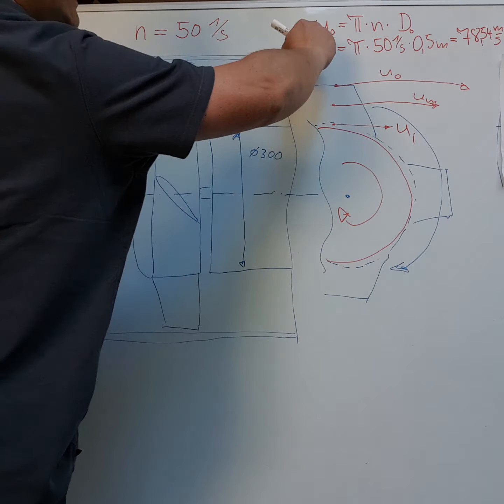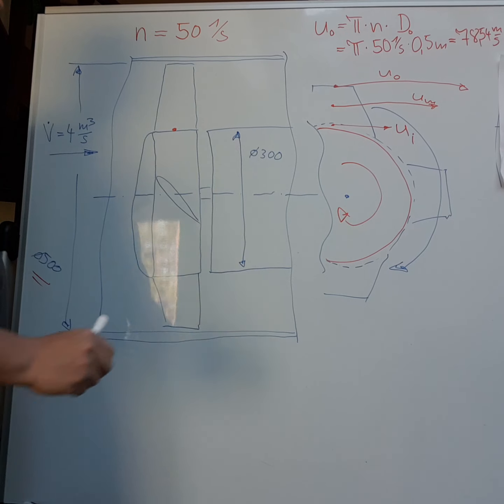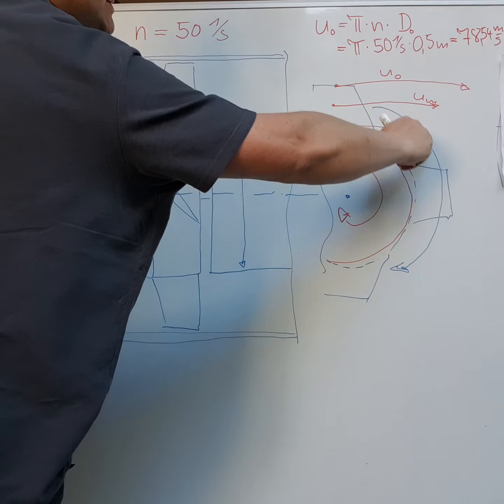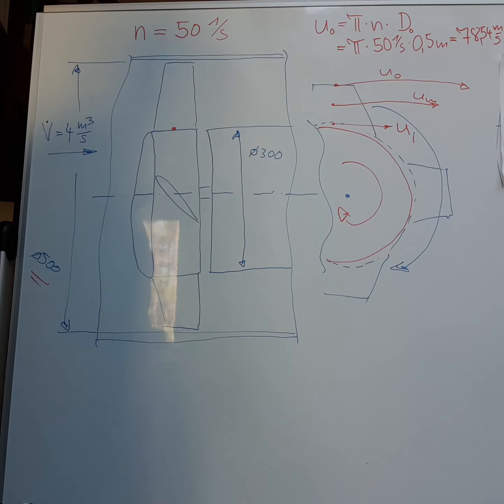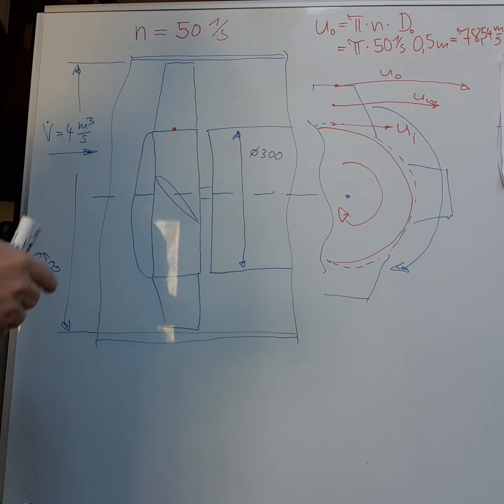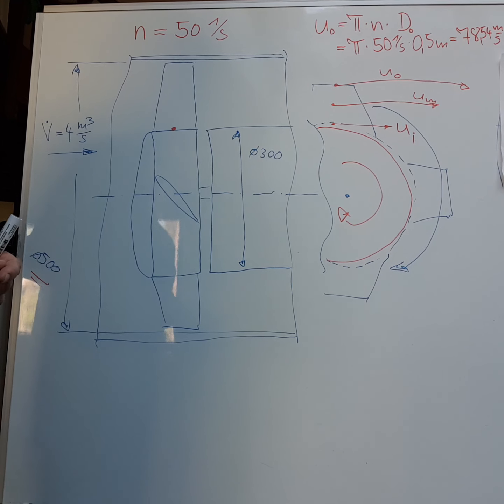Now we have calculated the velocity of the outer radius of the fan. That's the first part of our velocity triangle.